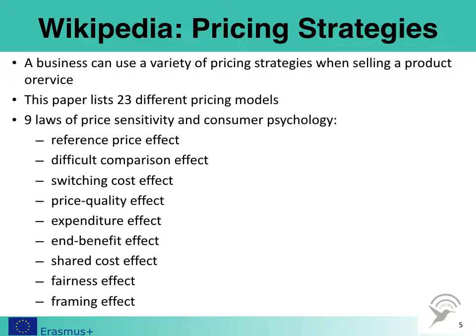The third paper covers pricing strategies, and it is a Wikipedia paper once again, listing a variety of pricing strategies when you sell a product or a service. This paper lists a complete set of 23 different pricing models, which all might be an option when you think about how to price software and its services when developing and delivering something.